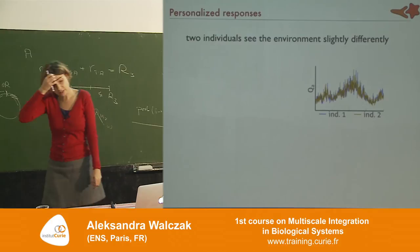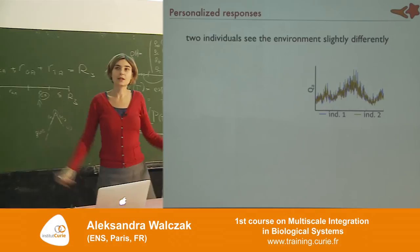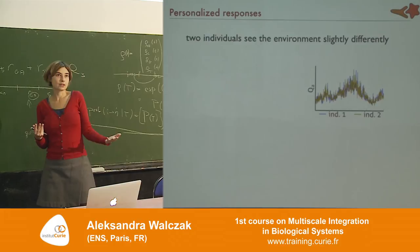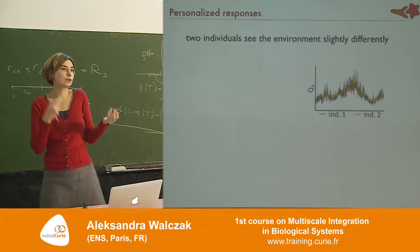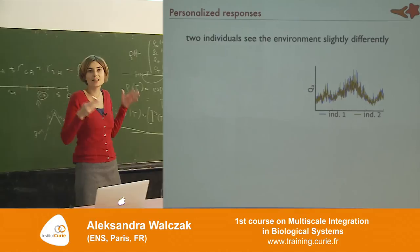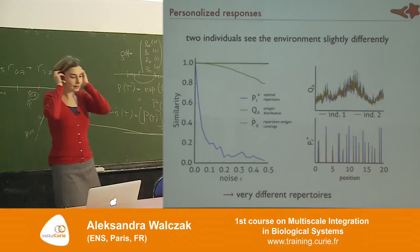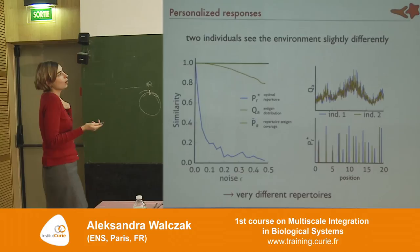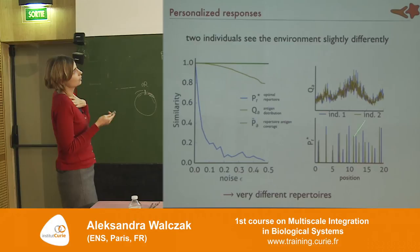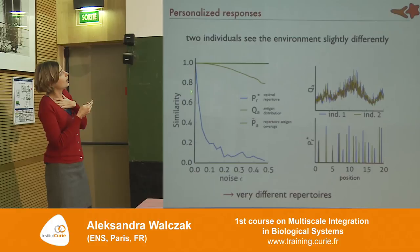What does this mean? If you have two individuals who are here in this room with all the autumn viruses flying around, we see more or less the same environment — of course, a slightly different version because our organisms pick up things slightly differently. So let's say I see the blue environment and you see the yellow environment — basically the same environment with some random noise. The prediction then is: what are the optimal repertoires for these environments you're seeing?